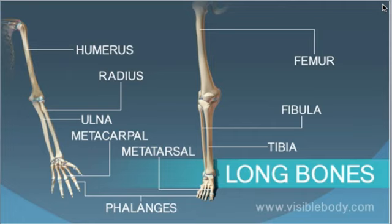Long bones also include relatively small bones such as the metacarpals, the metatarsals, and the phalanges. Even though you would automatically think that they are short bones, they're not — they're long bones, because they are longer than they are wide. That's really important.